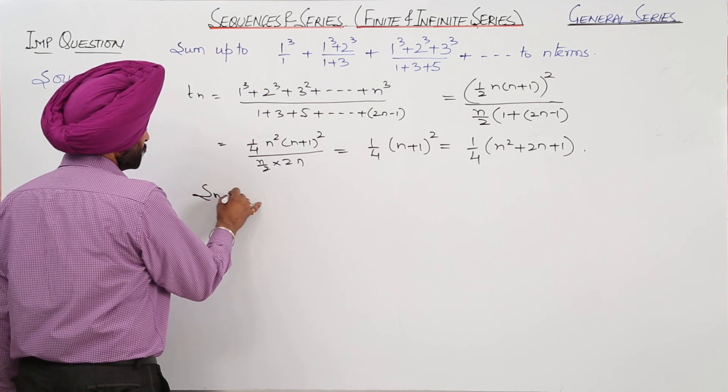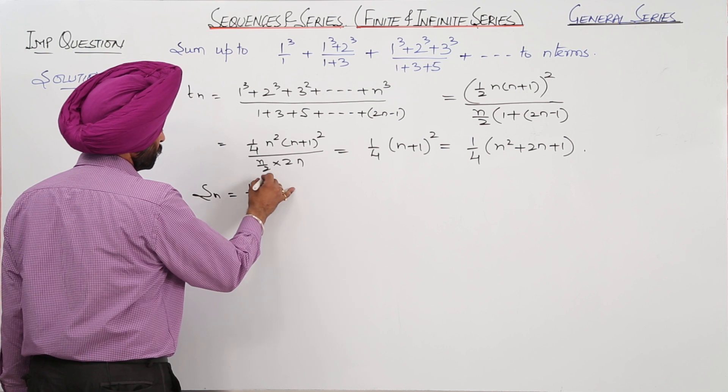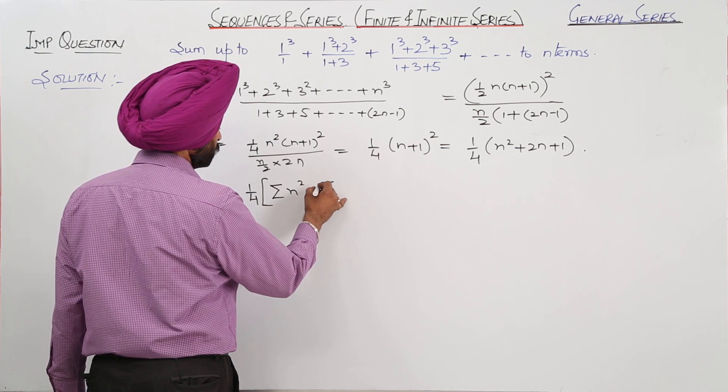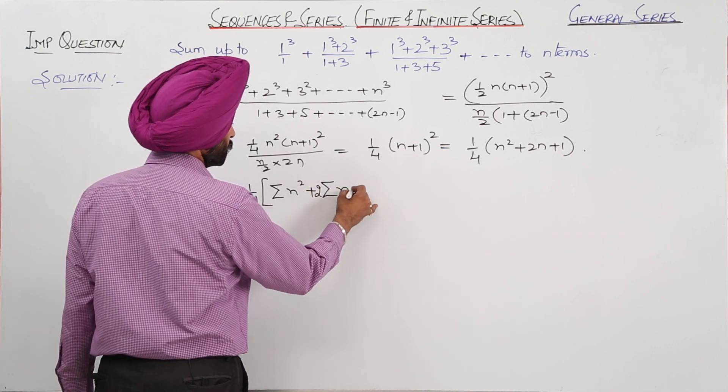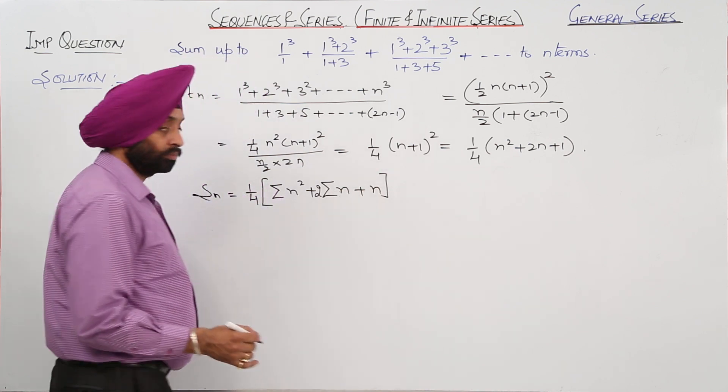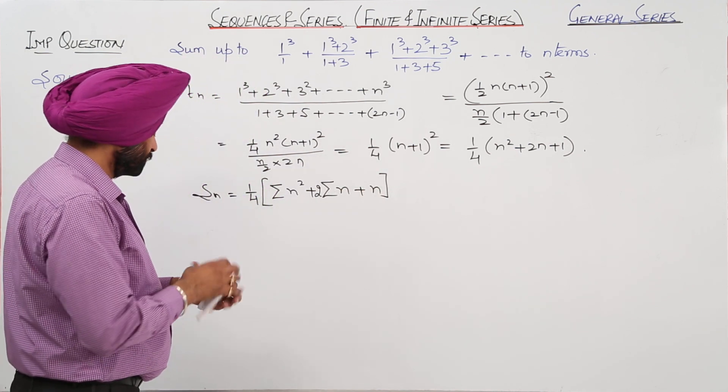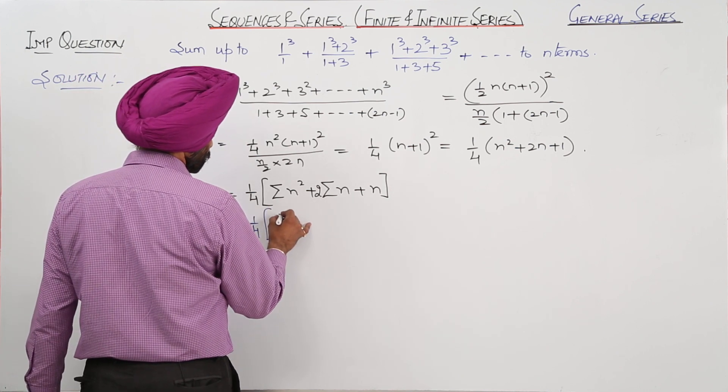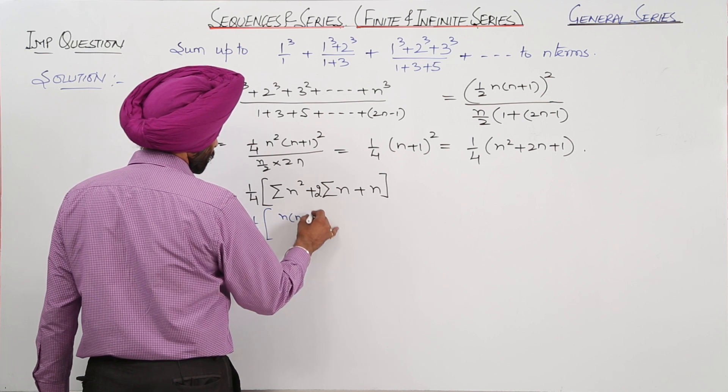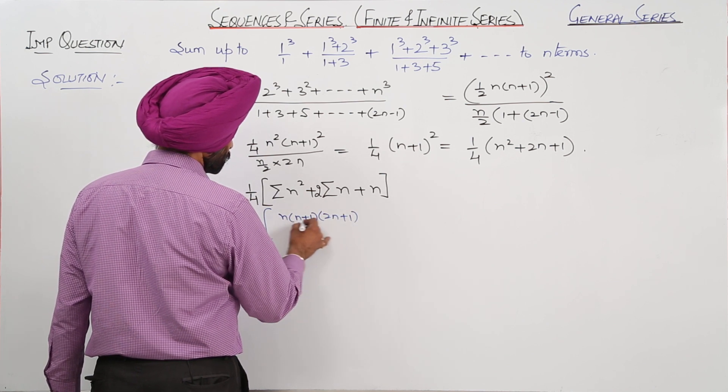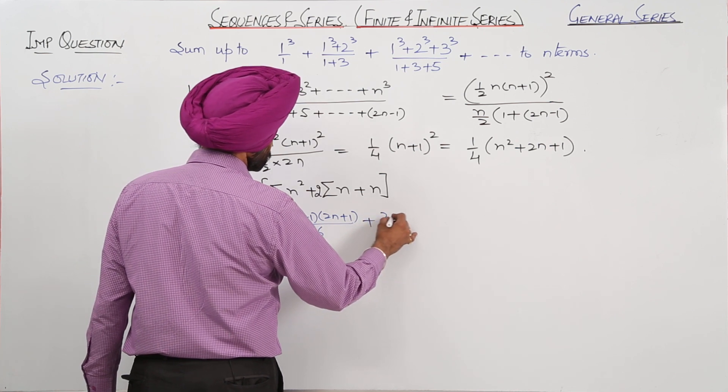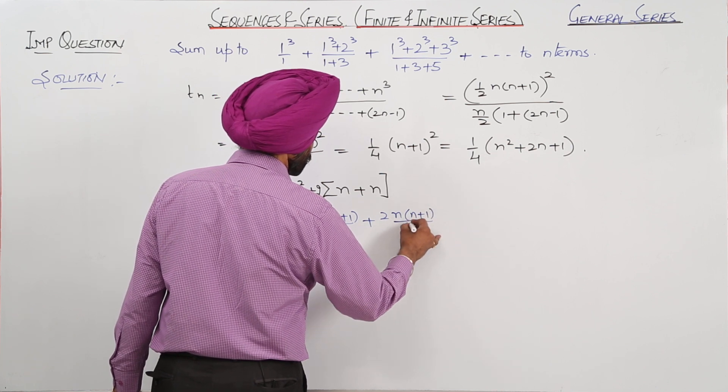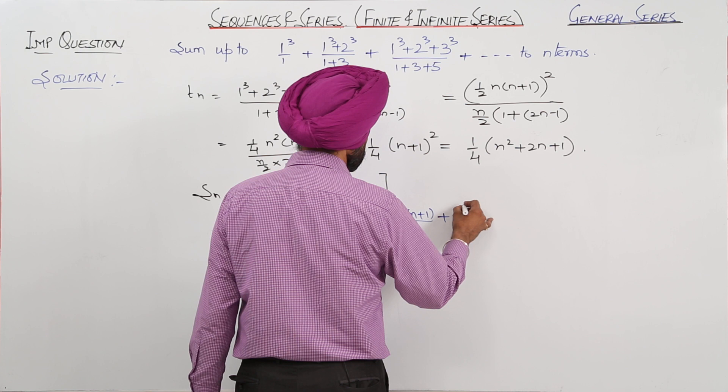Now Sn is equal to 1/4 summation for n² plus twice of summation for n plus n. So 1/4, now n(n+1)(2n+1)/6 plus twice of n(n+1)/2 plus n.